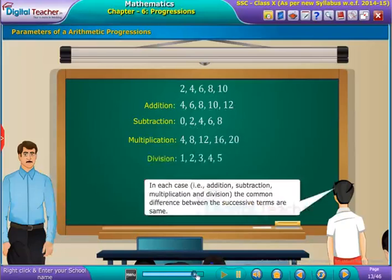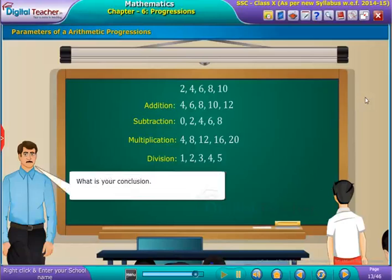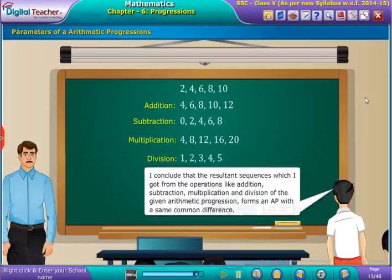What is your conclusion? I conclude that the resultant sequences which I got from the operations like addition, subtraction, multiplication, and division of the given arithmetic progression form an AP with the same common difference.